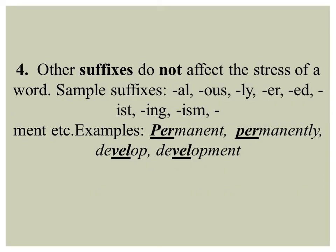Other suffixes do not affect the stress of a word. Sample suffixes that leave stress unchanged include: '-al', '-ous', '-ly', '-er', '-ed', '-ist', '-ing', '-ism'. For example, the word 'permanent' has stress on 'per', and when you derive 'permanently' from it, the place of stress does not change — it remains on that first syllable 'per'. Similarly, 'develop' and 'development' — the stress position remains the same when these suffixes are added.